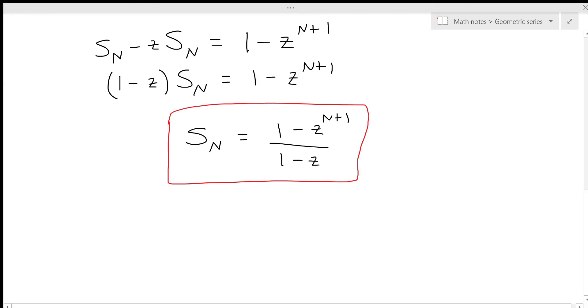So now the key observation is the following. As n goes to infinity, so as we include more and more terms in our partial sum, z to the n plus 1 goes to 0 if the absolute value of z is less than 1. And that's just because if you take a number that's less than 1 and you raise it to higher and higher powers, it eventually approaches 0.